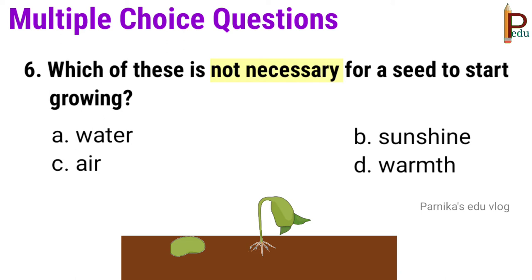The answer is B — sunshine, because water, air, and warmth is enough for a seed to start growing.